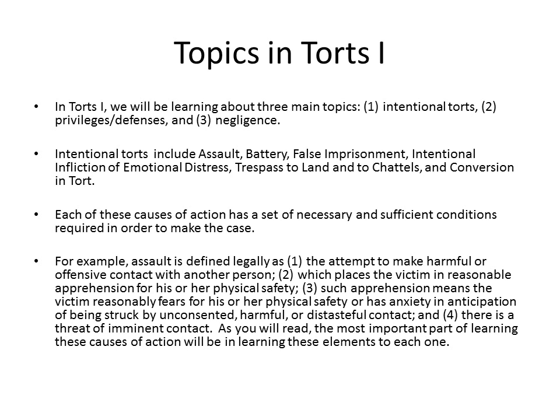Each one of these specific TORTS actions has a set of necessary and sufficient conditions required in order to make the case. For example, assault in the TORTS system is legally defined as the attempt to make harmful or offensive contact with another person, which places the victim in reasonable apprehension for his or her physical safety. Such apprehension means the victim reasonably fears for physical safety or has anxiety in anticipation of being struck by unconsented, harmful, or distasteful contact, and there is a threat of imminent contact. The most important part of learning these causes of action will be learning the elements of each different TORT.